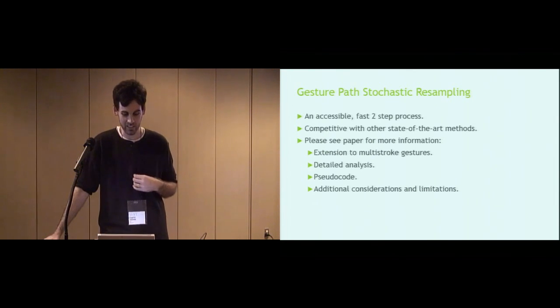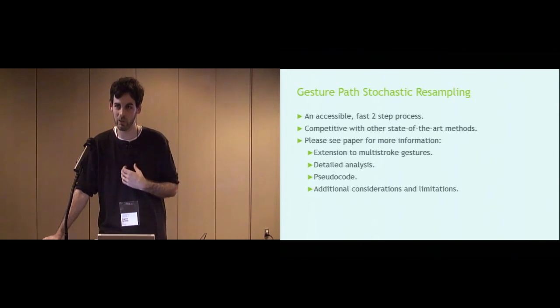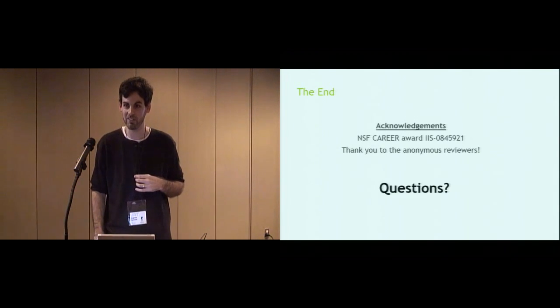And that brings us close to the end. So to reiterate, we introduced a new method, gesture-pass stochastic resampling, that is a simple two-step process to generate synthetic data to better improve recognizers. And we focused a lot on rapid prototyping, but you can see it's competitive with other state-of-the-art techniques, which means that it probably can be used with a lot of other gesture recognizers as well. And that's part of what we're going to explore in the future. There's a lot of things that we didn't have time to go into, so I encourage you to see the paper if this interests you, like how do we extend this to multi-stroke samples, some more detailed analysis on optimal N, as well as recognition accuracy, pseudocode, and, of course, limitations. So I think that's it on time. Thank you.